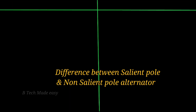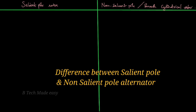In this question, we have to compare salient pole and non-salient pole. We need to write down the difference between the salient pole type rotor and the cylindrical type rotor — that is, the non-salient pole or smooth cylindrical type rotor. This is the difference between the two.